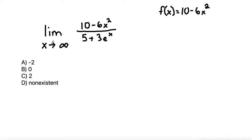what happens as x approaches infinity? Well, this is a quadratic with a negative leading coefficient, so it's going to have the end behavior of down-down. So that's going to approach negative infinity for the numerator.